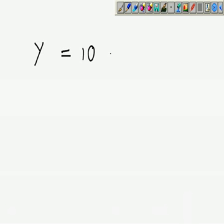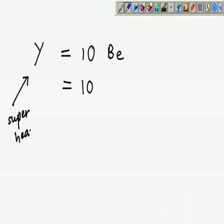Now 10 times heavier means this one is really super heavy. Now our task is to find the relative atomic mass of beryllium. So beryllium is 9. Okay, so the RAM of beryllium is 9.